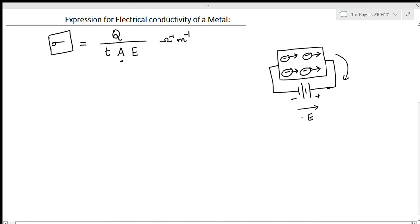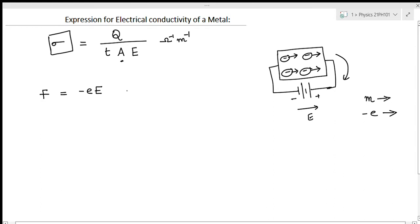Let m be the mass of the electrons and minus e be the charge of the electrons. The force experienced by the free electrons due to the applied electrical field is minus eE. Taking this as equation number one.